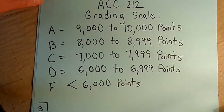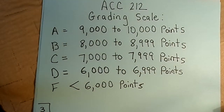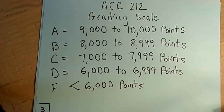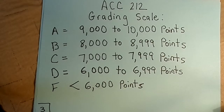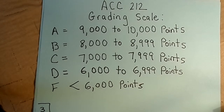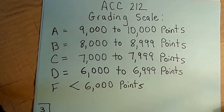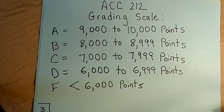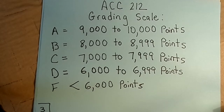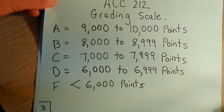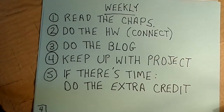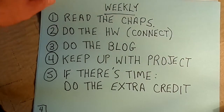Here's the grading scale: 9,000 to 10,000 points earns an A; 8,000 to 8,999 earns a B; 7,000 to 7,999 earns a C; 6,000 to 6,999 earns a D; and fewer than 6,000 points unfortunately means you fail the class.